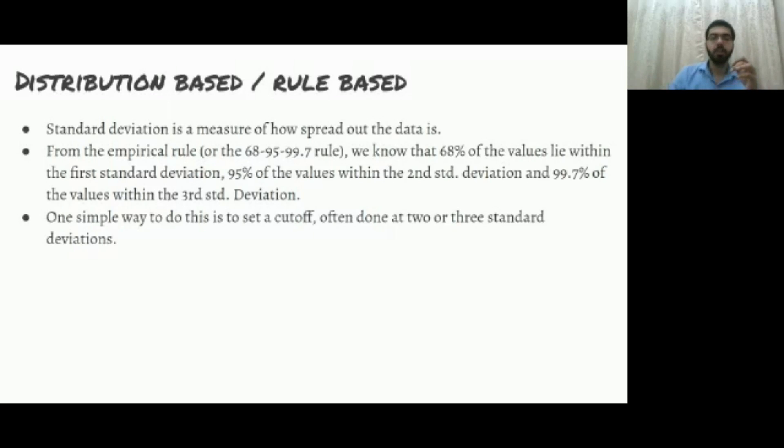Or even detect them. If you have an automated system, you can just say whenever a value crosses this threshold, flag it as an outlier.